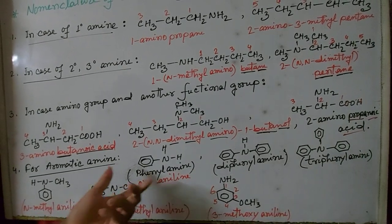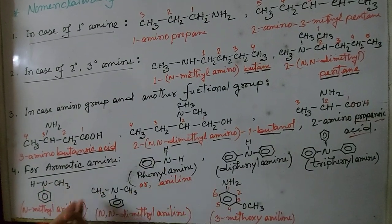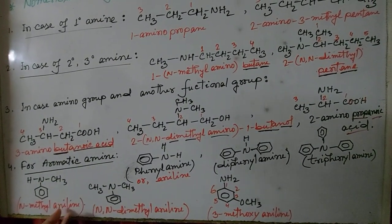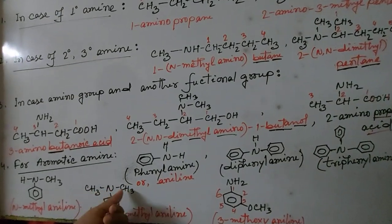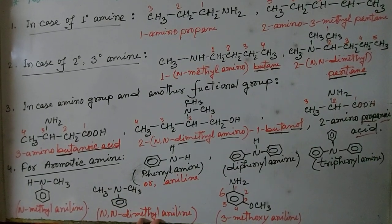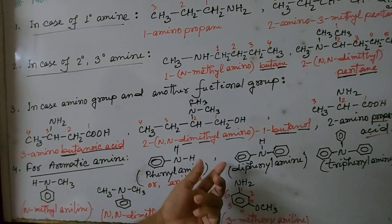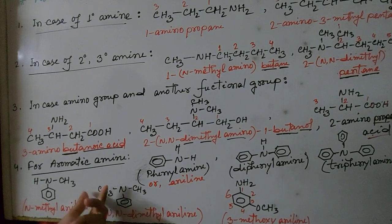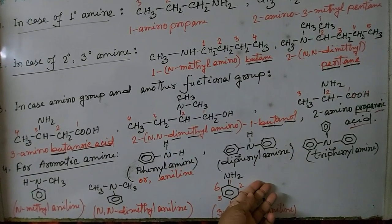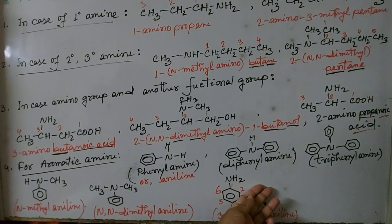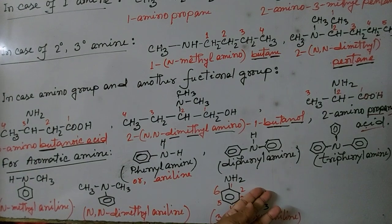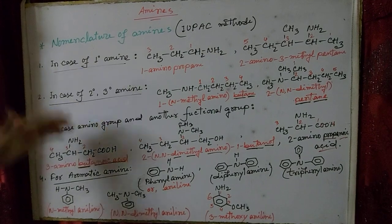The parent compound is aniline, and one hydrogen on nitrogen is replaced by a methyl group, giving N-methylaniline. When two methyl groups are both bonded to the nitrogen atom, it is N,N-dimethylaniline — di for two methyl groups — and the parent compound remains aniline. Finally, when one hydrogen atom at the 3rd carbon of aniline is replaced by a methoxy group, the compound is named 3-methoxyaniline. That covers all the nomenclature of amines.